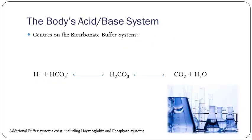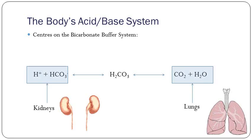More interestingly, the acid-base system in the body — the buffer system — if you remember from chemistry, it's very simple and straightforward. The buffer system focuses on two main organs: the lungs, which control the CO2 going out, and the kidneys, which control the bicarb.